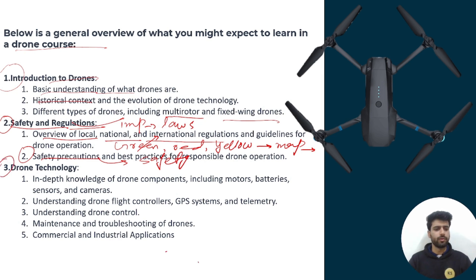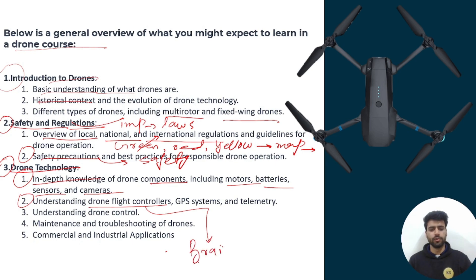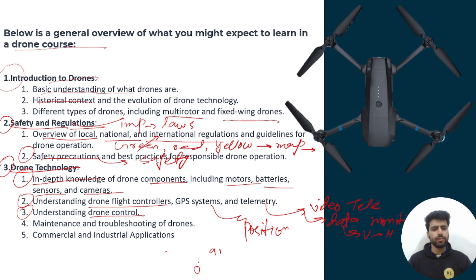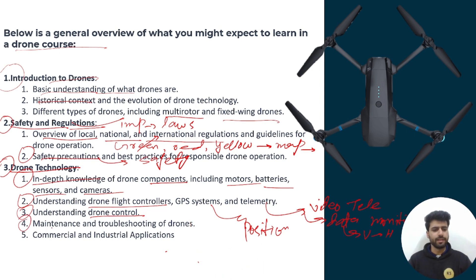Next is drone technology — an in-depth look at drone components like motors, batteries, sensors, and cameras. Then comes the drone flight controller, the brain of the drone, along with GPS systems, telemetry, and data monitoring including velocity and altitude.